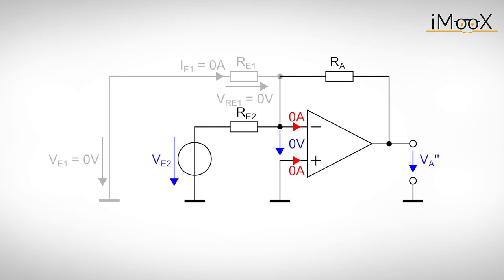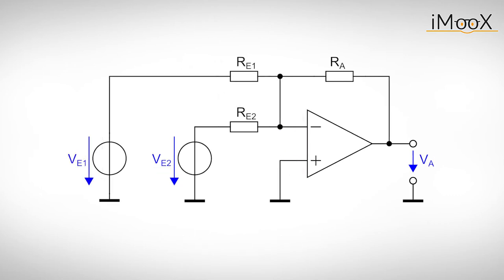The process is exactly the same for the second input source. Superpositioning the two individual output voltages gives the output voltage of the summing amplifier.